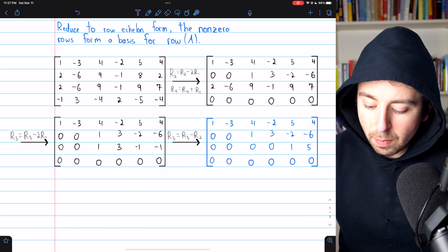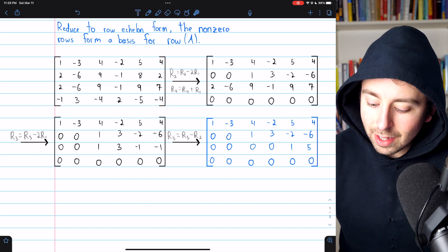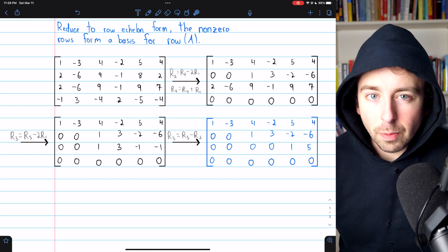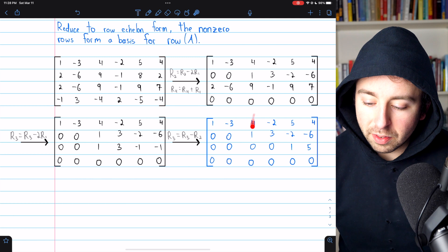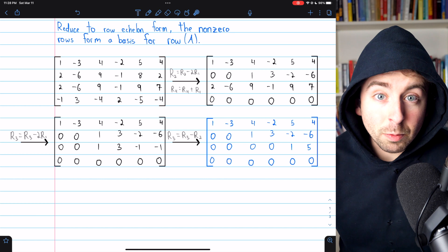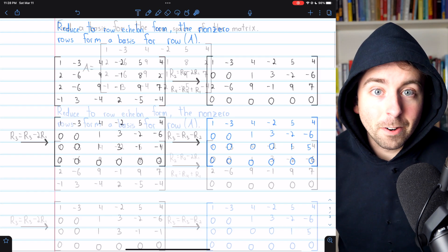We perform a couple more steps, and then we get to row echelon form. It's worth pointing out that this is not reduced row echelon form. It doesn't need to be. For example, this leading one is not in a column of zeros, which it would need to be to be reduced row echelon form, but we don't need it in reduced row echelon form, so we're perfectly fine just stopping here.